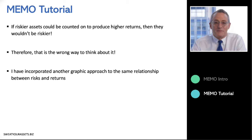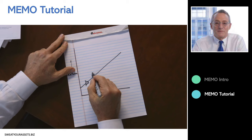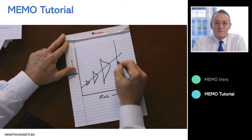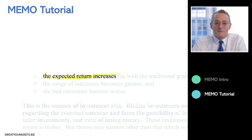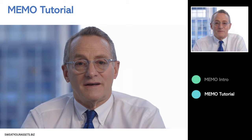I think that's the wrong way to think about it, and so I have incorporated another graphic approach to the same relationship. I've taken the same upward-sloping line and superimposed a number of bell-shaped probability distributions at different stages of the risk curve. What they indicate is that the outcome at a given level of risk is not a fixed point, as suggested by that simple line, but rather a range of possibilities. As we move out the risk curve to the right, not only does the expected return increase, but at the same time the range of possible outcomes becomes greater and the bad outcomes become worse. I think this is the nature of risk.